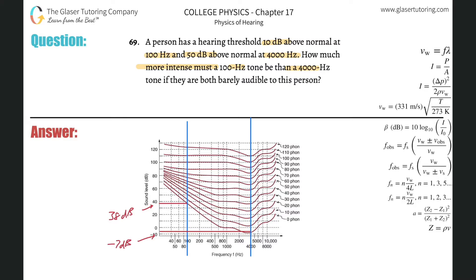Now they say that at 100 hertz the threshold of hearing is 10 decibels above normal. So if this is normal at 38, then 10 decibels above that would be 48 decibels. Then it says at 4,000 hertz it's going to be 50 decibels above, so take negative seven and add 50 — that gives 43 decibels.